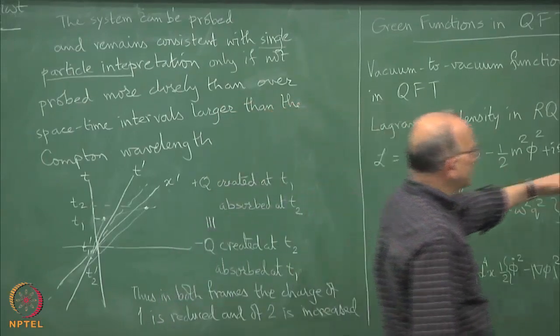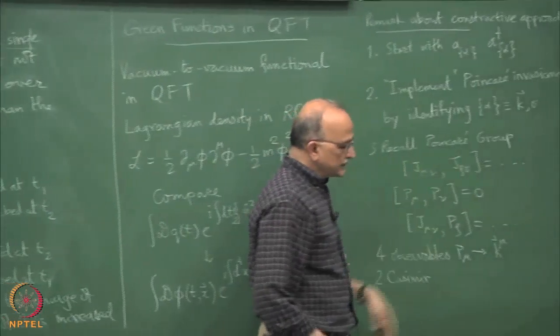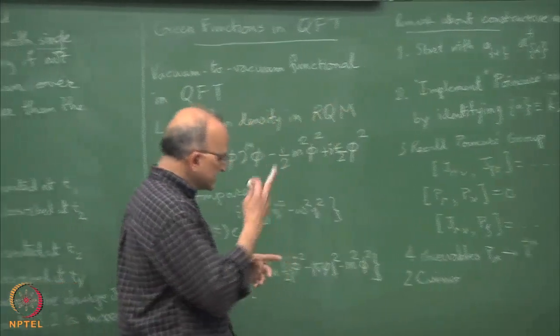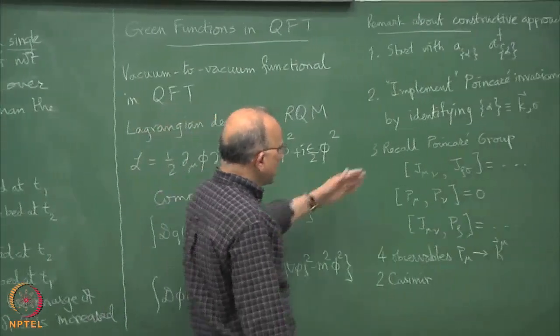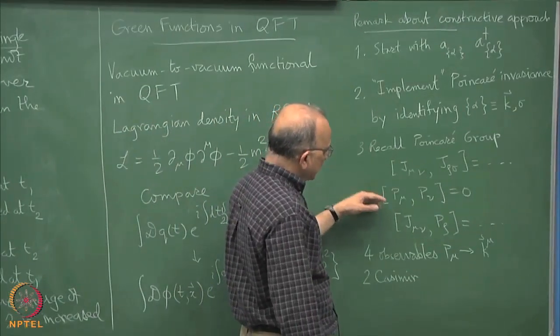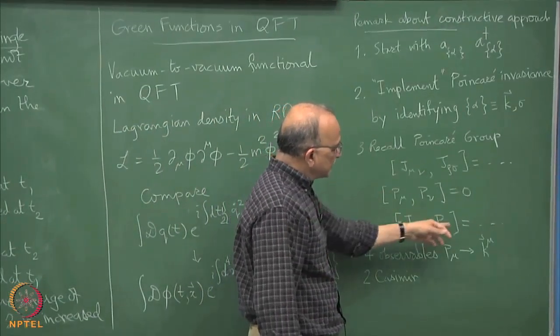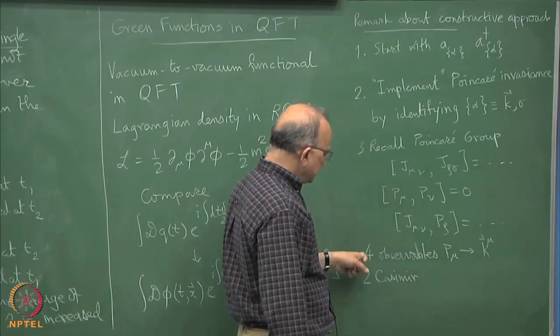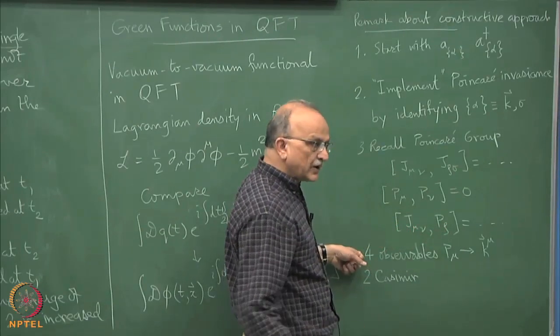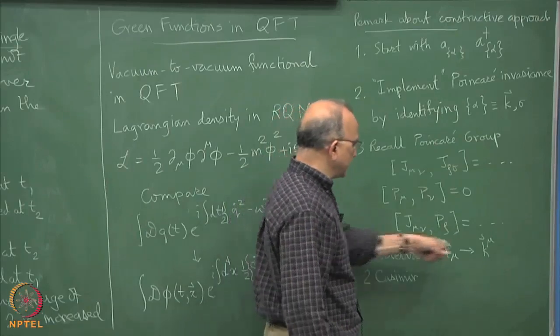If you did not have the translations then there will be 2 observables, one is the rotation J3. It is equivalent to SU(2) cross SU(2). There will be 2 independent observables, one you can say is your third axis rotation, but once you put in the P mu's, the P mu's never leave any of the J mu nu invariant.